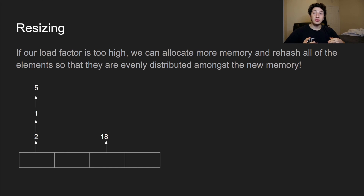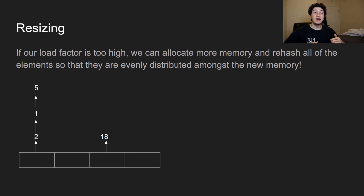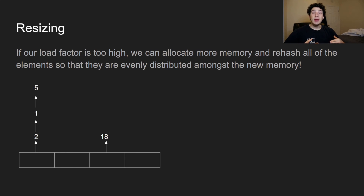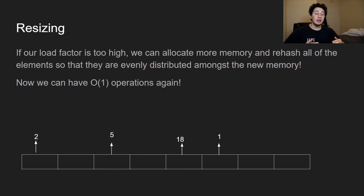When the load factor is too high — a threshold determined experimentally — we increase the size of the underlying array by allocating a new one, then rehash all existing elements so they're evenly distributed in the new memory. For example, we start with an array of size four where three elements share the same bucket. We increase to size eight, rehash everything, and now each element is in its own bucket, giving us O(1) operations again.